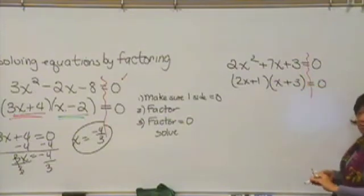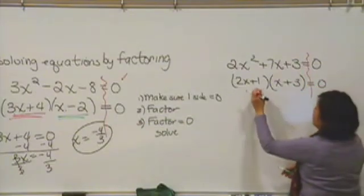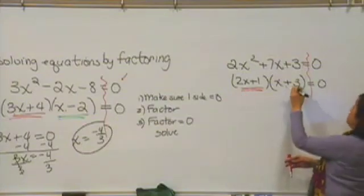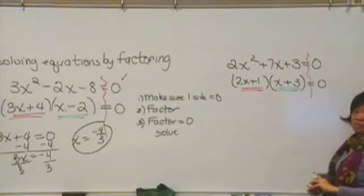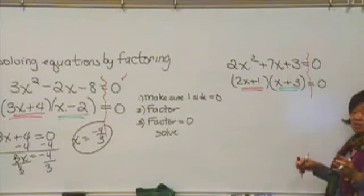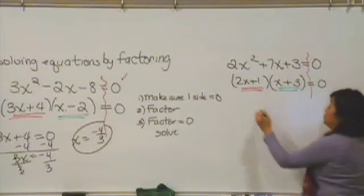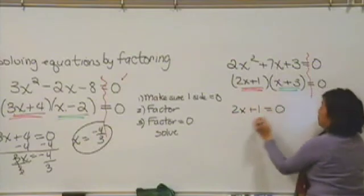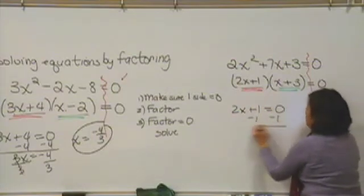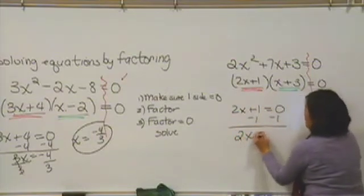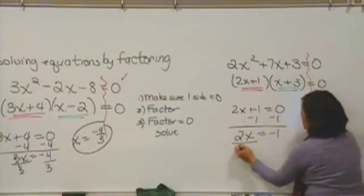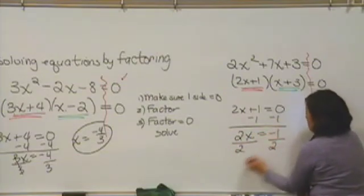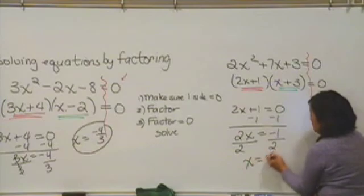Once we factor, we have two factors, a red factor and a green factor. You take each one and say factor equals zero. So here's the red factor, 2x plus 1 equals zero. I'll subtract 1 from both sides. That gives me 2x equals negative 1. I'll divide both sides by 2, and I have an answer x equals negative 1 half.